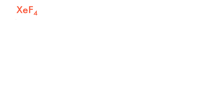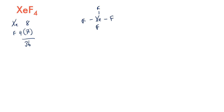For xenon tetrafluoride (XeF₄), xenon has 8 valence electrons and we have 4 fluorines with 7 valence electrons each, giving us 36 electrons total. Fluorines are the terminal atoms because they cannot expand their octet, whereas xenon can. We draw the skeleton structure of xenon fluoride with 4 single bonds.